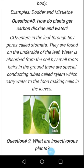Carbon dioxide and water are the two major components used in the process of photosynthesis. Carbon dioxide present in the air enters into the leaf through the tiny pores called stomata.